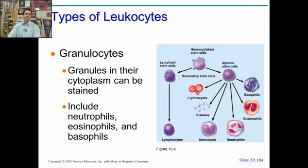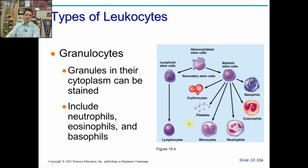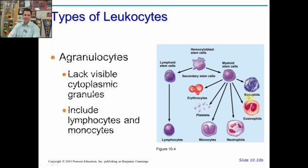Types of leukocytes: granulocytes have granules — little tiny dots in them that stain different colors. Types include neutrophils, eosinophils, and basophils. Those granules are chemicals that can be released from the cell.